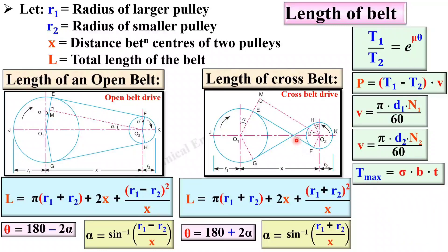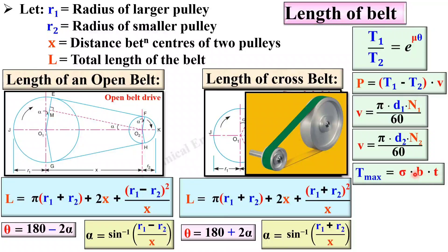Maximum tension in the belt is equal to sigma × b × t, where T_max is always in Newton. Sigma is the stress in the belt with units of Newton per mm². B is the width of the belt in mm, and t is the thickness of the belt in mm. Keep in mind that the width is comparatively much greater than the thickness of the belt, as you can see from the figure.